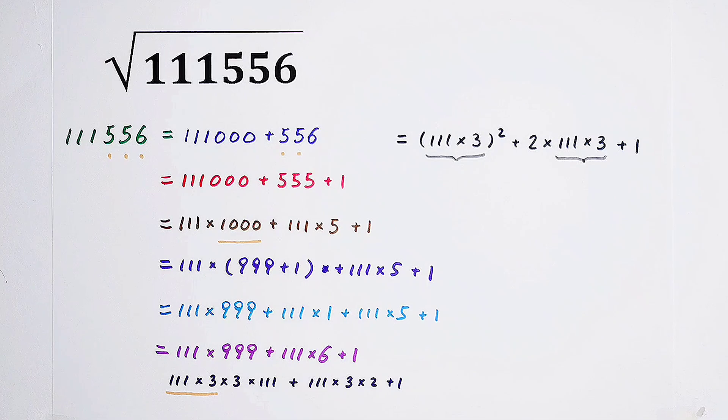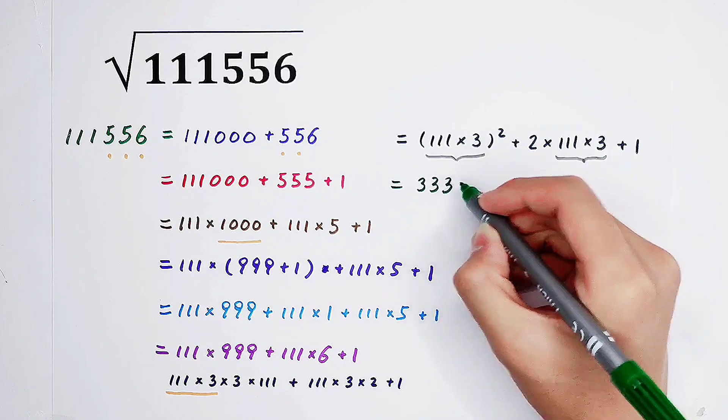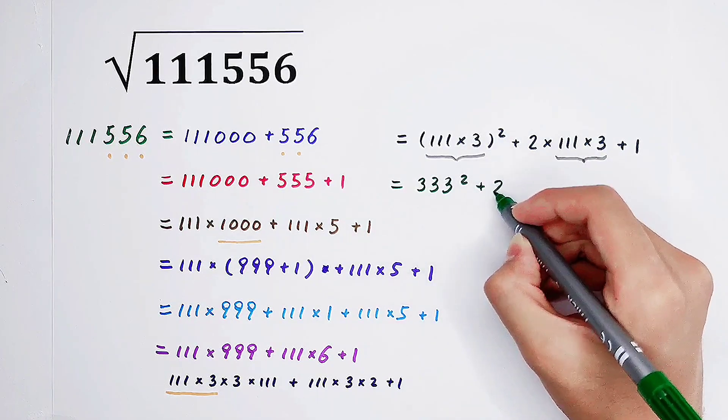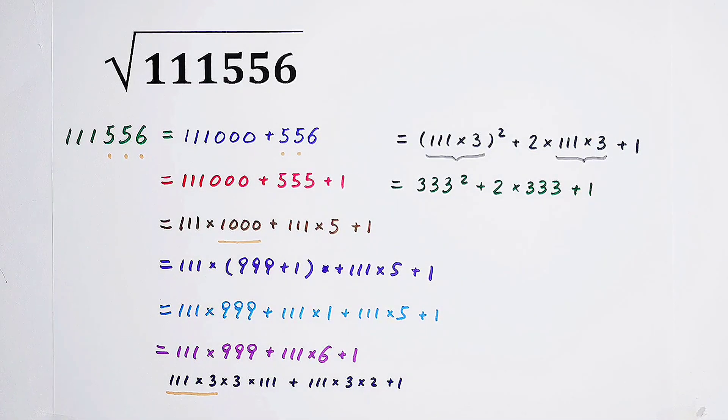We all have noticed that 111 times 3, 111 times 3, appears 2 times, you know, this term. So it is 333, or squared, then plus 2 times 333, then plus 1. You've succeeded!